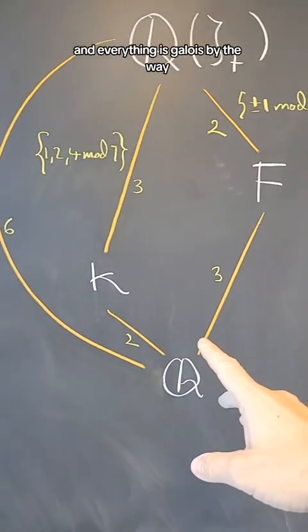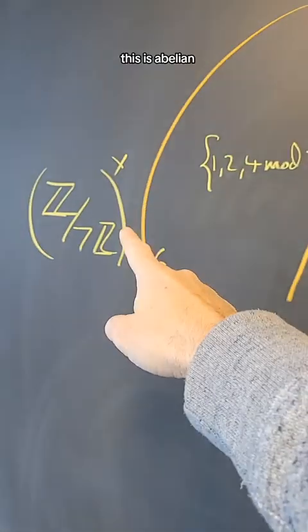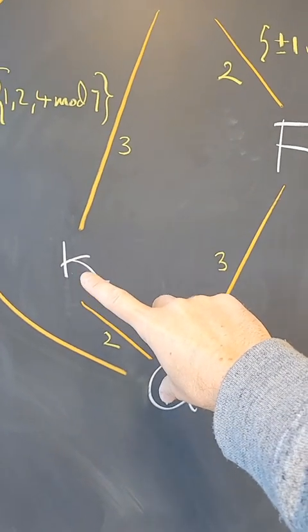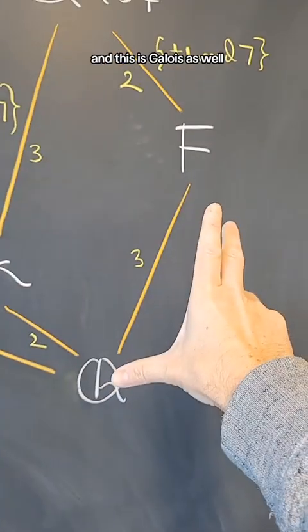And everything is Galois, by the way, because these subgroups, this is abelian, so those groups are normal. So this is Galois, and this is Galois as well.